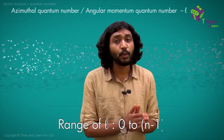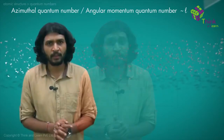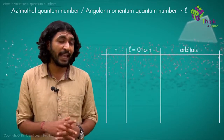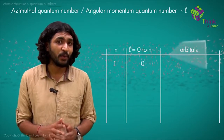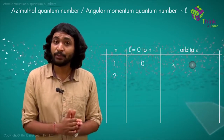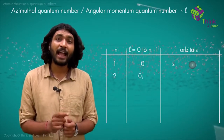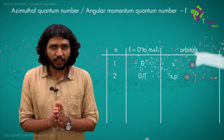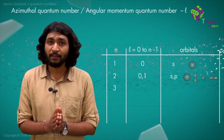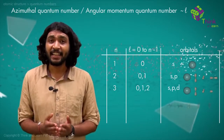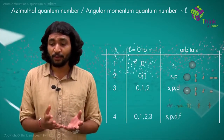The azimuthal quantum number, represented by L, ranges from values 0 to N−1, where N is the principal quantum number. For N = 1, L = 0, meaning only the S orbital exists in the first energy level. For N = 2, L = 0 and 1, so the second energy level has both the S orbital and the P orbital. For N = 3, L = 0, 1, and 2, meaning the third energy level has three kinds of orbitals: S, P, and D. You can extrapolate this pattern for higher energy levels as well.